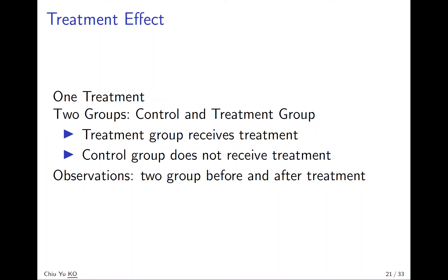We want to observe how the two groups behave before the event. The main assumption here is that before the treatment, the difference between the control group and the treatment group is not too large. In the literature, this is called the parallel trend assumption. We need to show they are similar before continuing with the analysis.